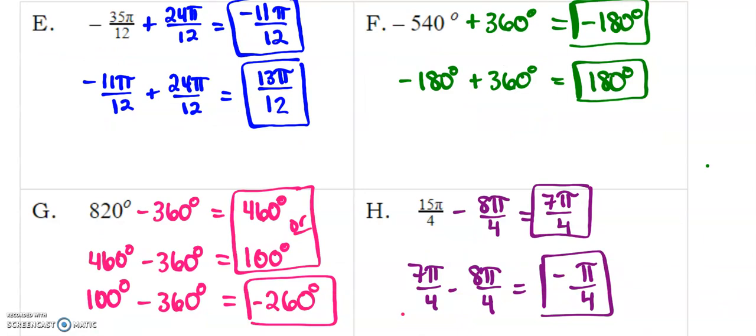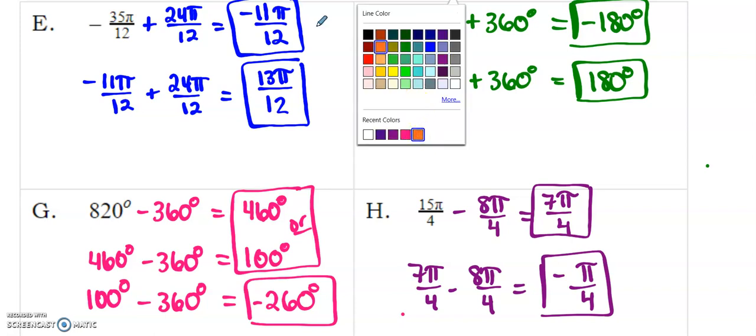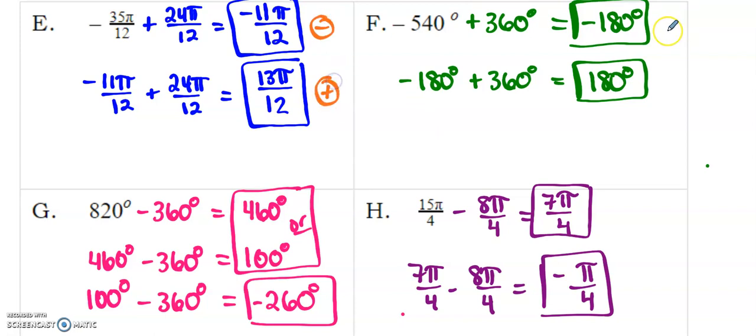So, here are your answers for this next section of problems. All right? Now, I want to point out a couple of things. So, we've got our negative answer here, our positive answer there, negative, positive. Again, these are not the only answers. These are the closest answers. What I want you to notice here is that in letter G, when I subtracted 360 twice, I still had a positive angle. So, either one of these, 460 or 100, those would count as your positives. But you'd have to keep going until you get to negative 260 degrees because that is an angle that has a negative sign in front. And then, you just needed to do minus 8 pi over 4 twice in order to get a positive and a negative angle for letter H.